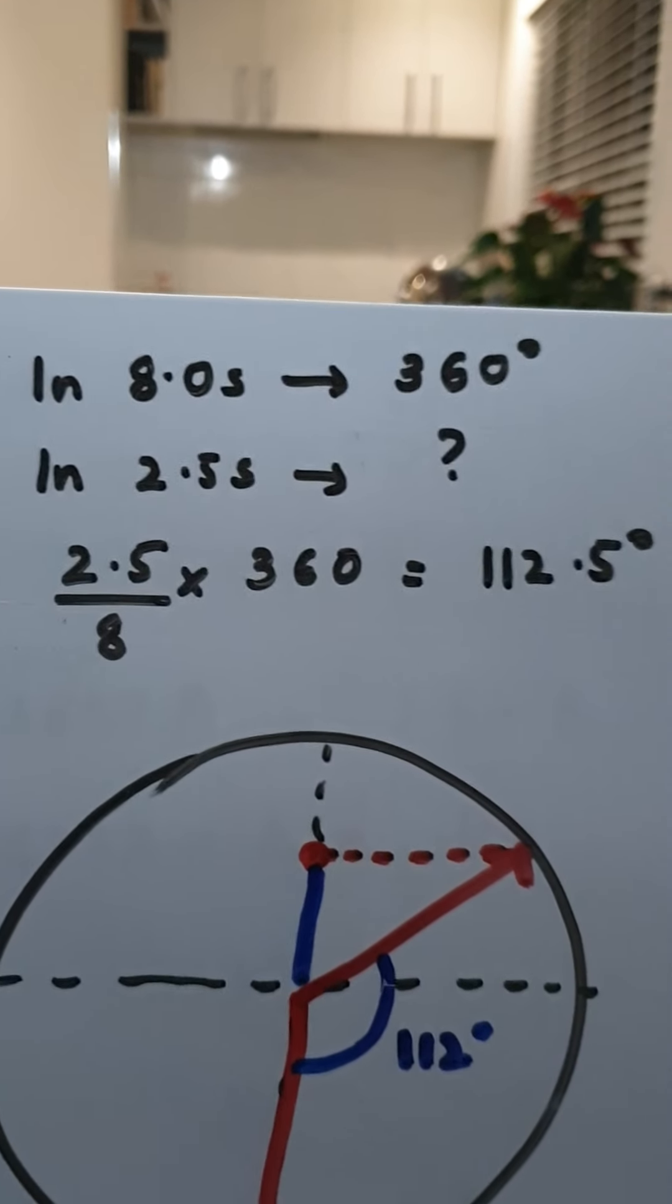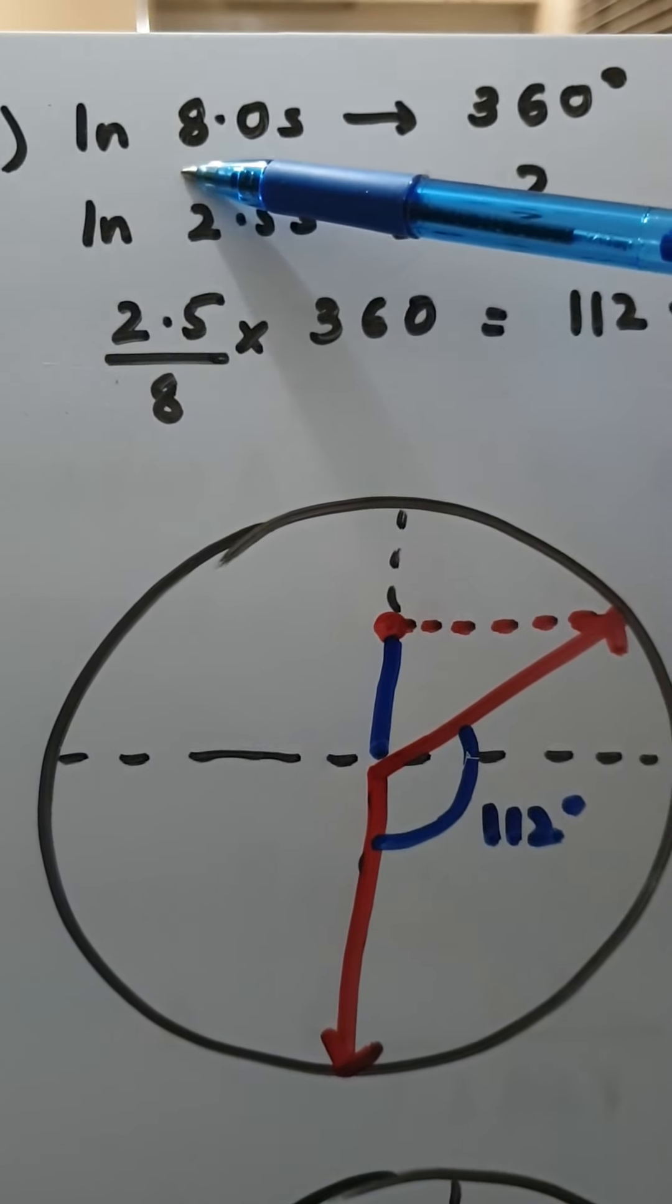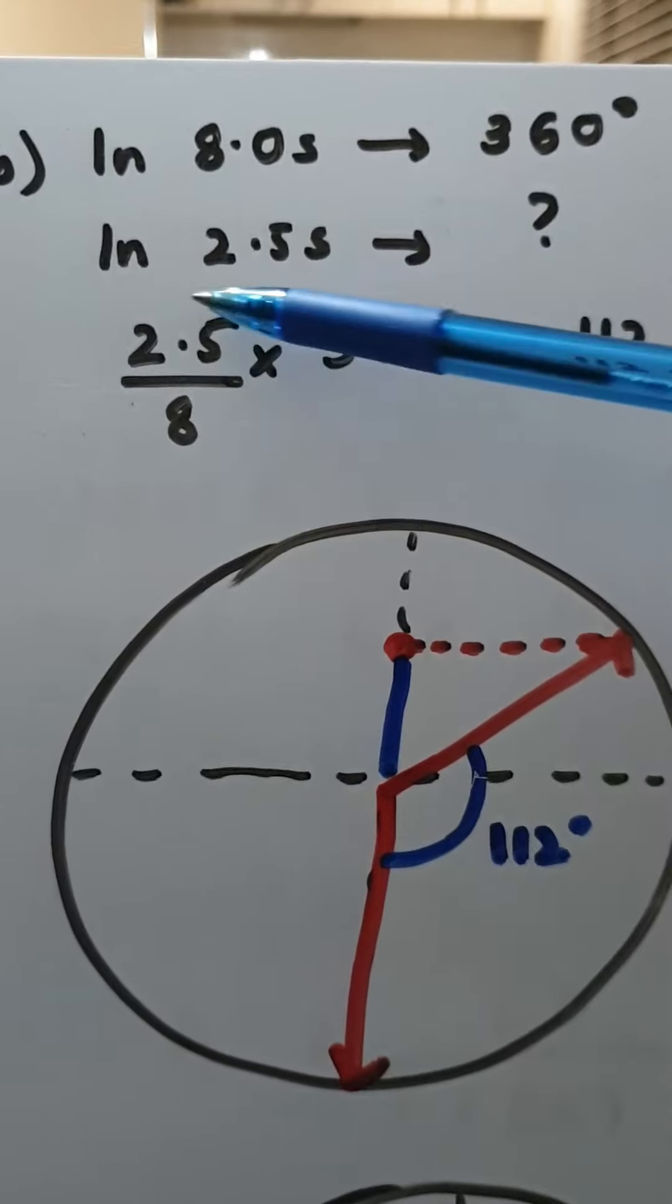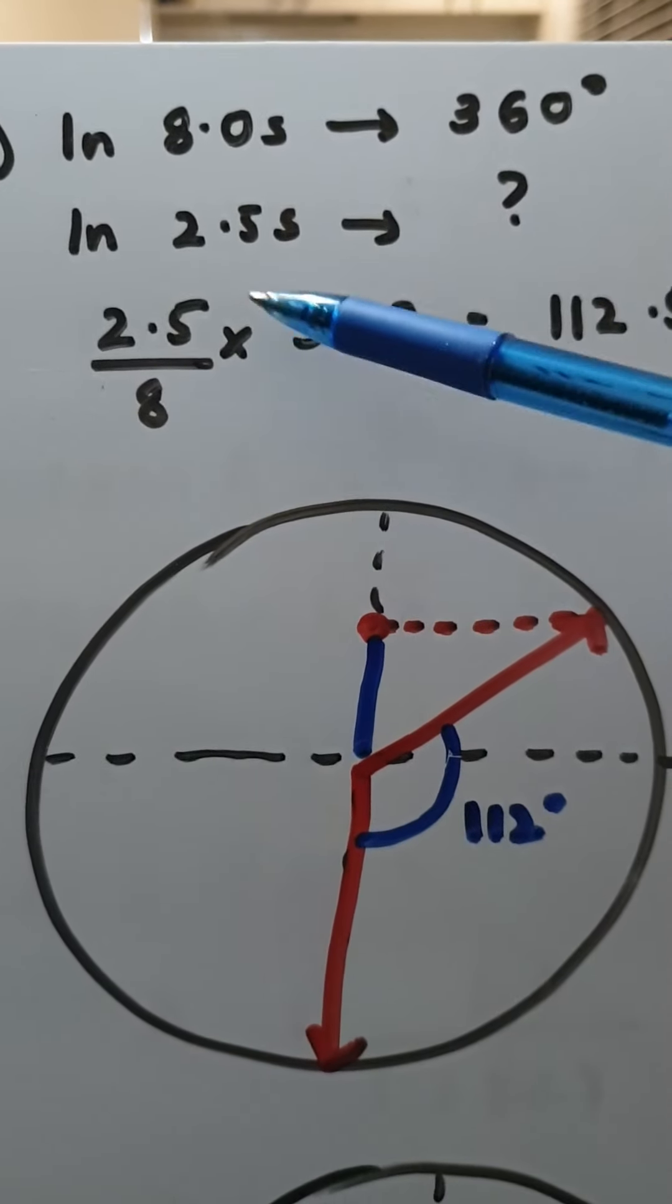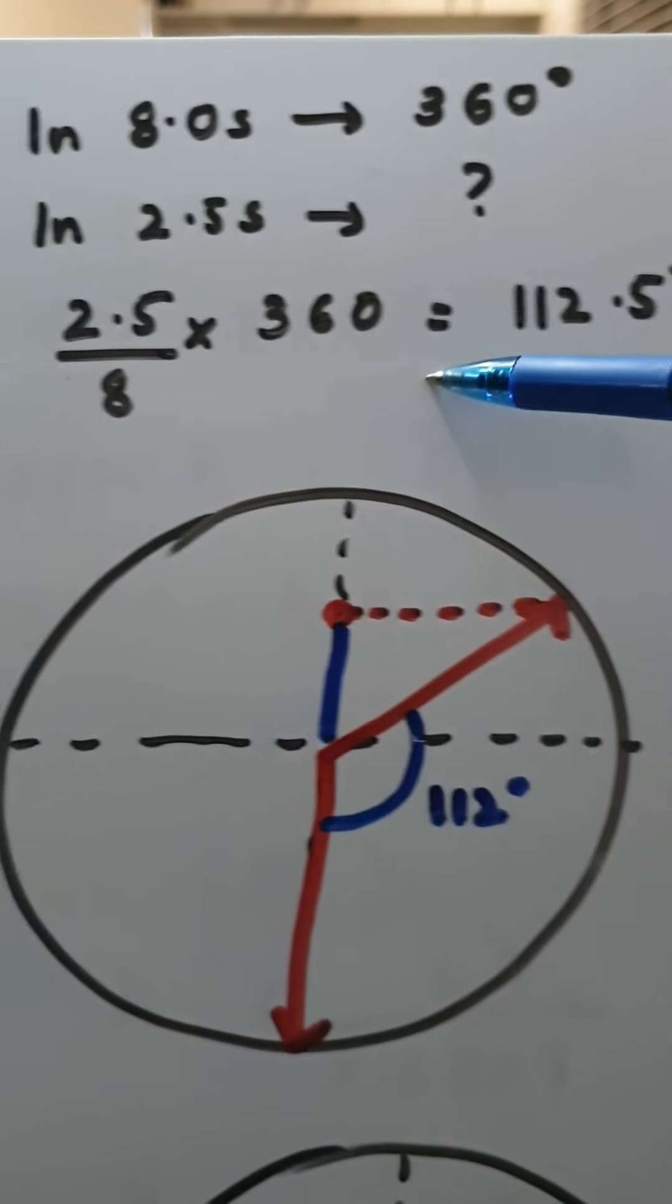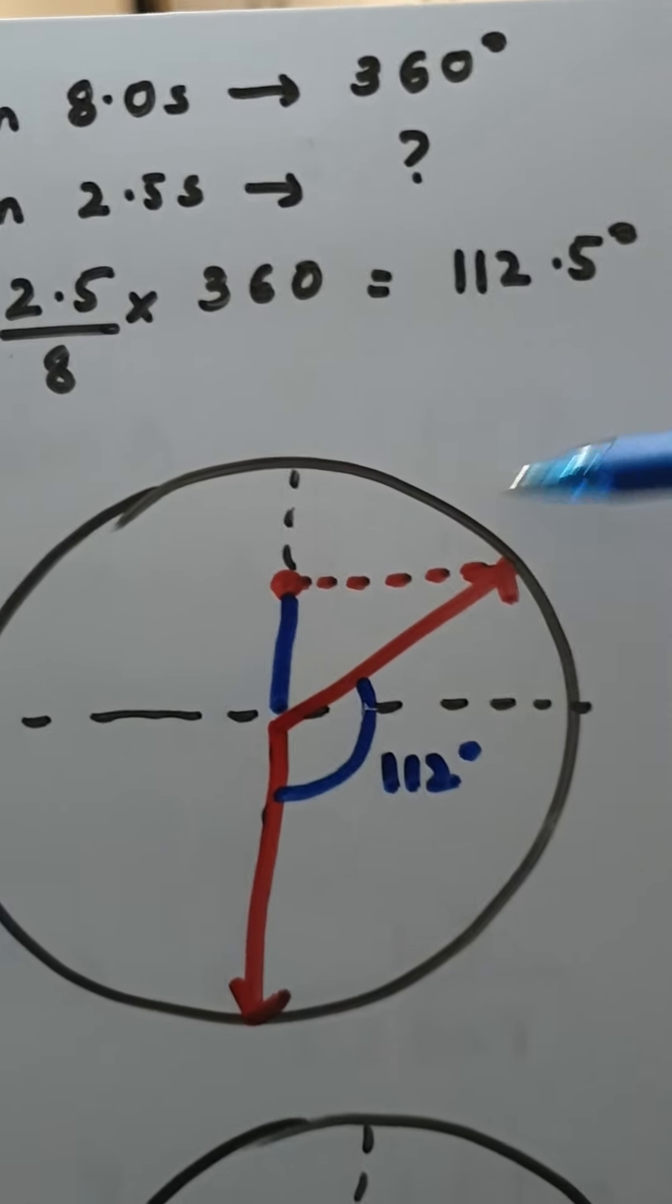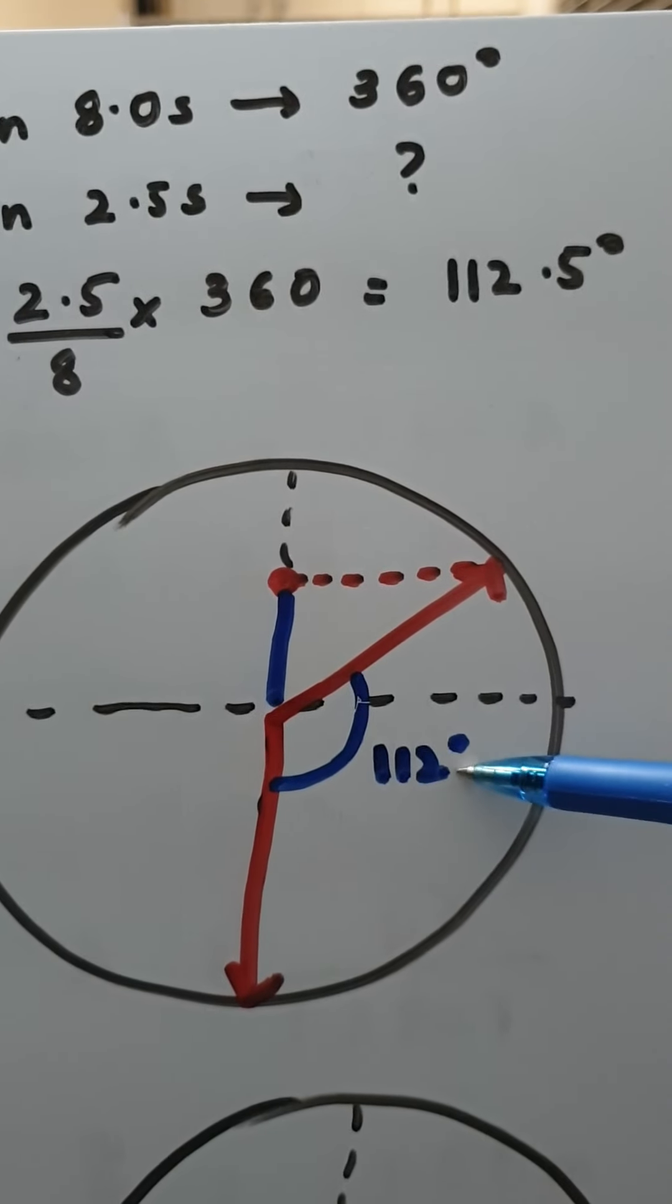I do it the proportion way so in 8 seconds it moves 360 degrees so in 2.5 seconds how much is it going to go? So it's 2.5 over 8 times 360 and I get 112.5 degrees. So that means this whole angle is 112.5.